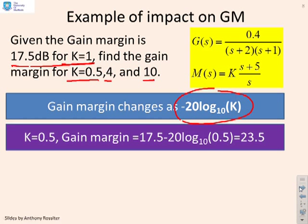Let's try K equals 0.5 then. So if K equals 0.5, then the gain margin is going to be what it was. That was 17.5 minus 20 log to the base 10 of K. Now K was 0.5, so we get minus 20 log to the base 10 of 0.5. And that's going to give me 23.5. And you'll notice I didn't have to re-sketch the boat diagrams. I didn't have to do any difficult computations. I just wrote the answer down by inspection.